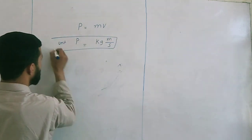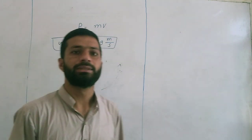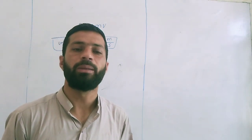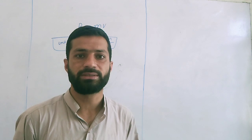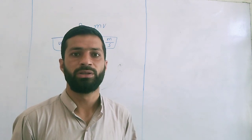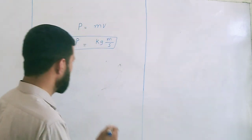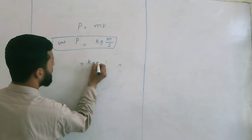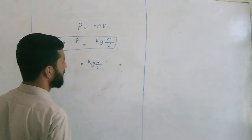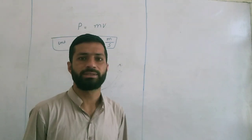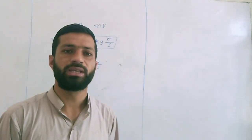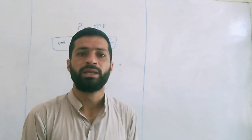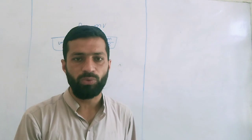But you may have read that kilogram meter per second can also be expressed as Newton second. So let us prove it. Kilogram meter per second — if we multiply this by second over second, we can multiply it, because second over second gives us one.